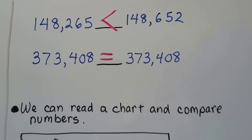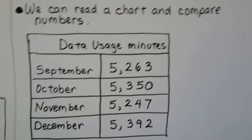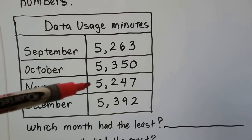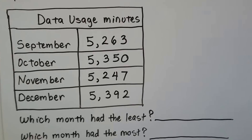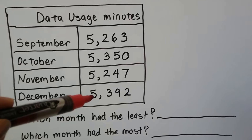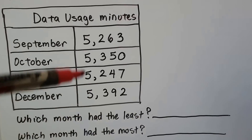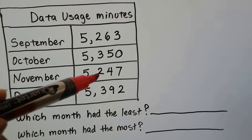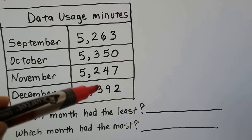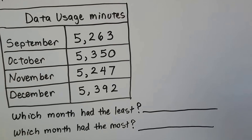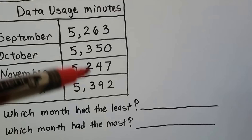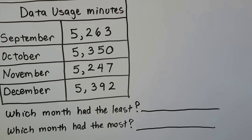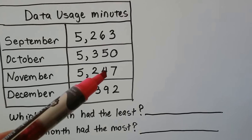We can read a chart and compare numbers. Here's data usage minutes: this many in September, October, November, and December. To find which month had the least — they all have a 5 in the one-thousands place. Looking at the hundreds: one has a 2, one has a 3 (that's bigger), another has a 2. Moving to the tens place, September has a 6 and November has a 4. So November, with the 4 in the tens place, had the least data usage minutes.